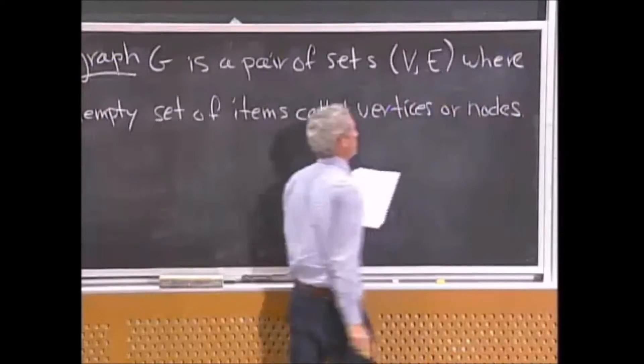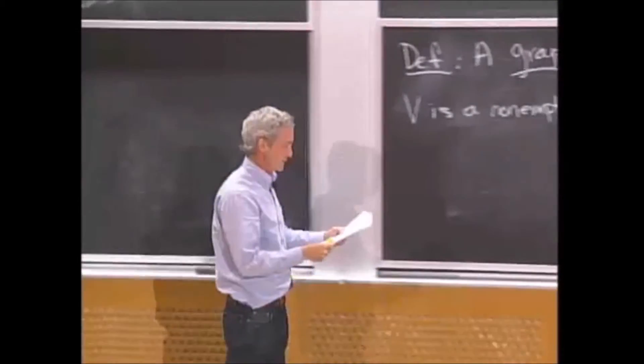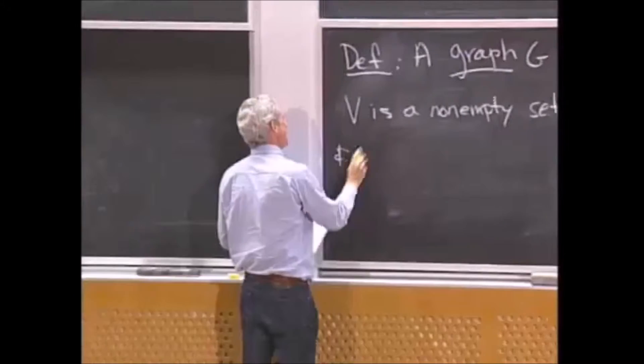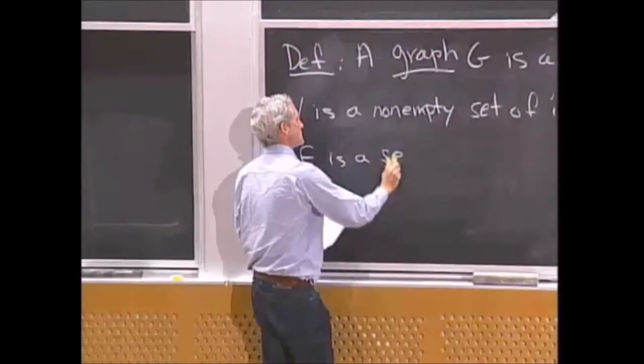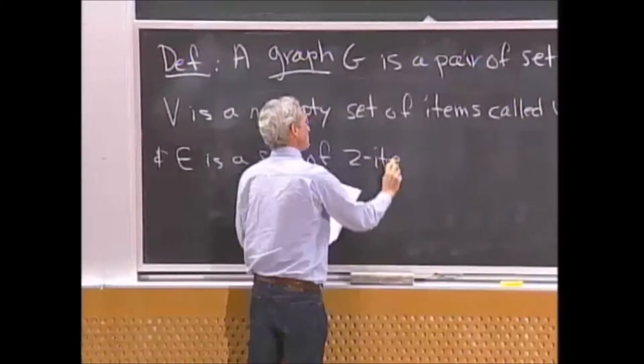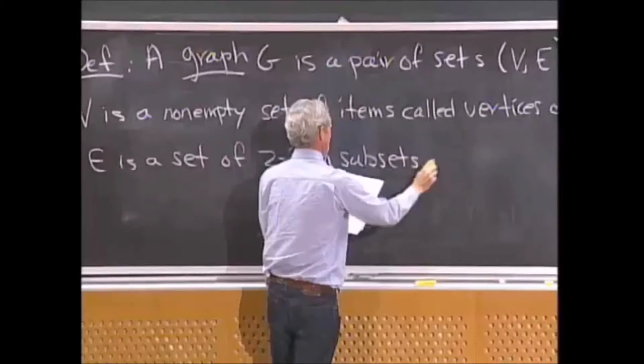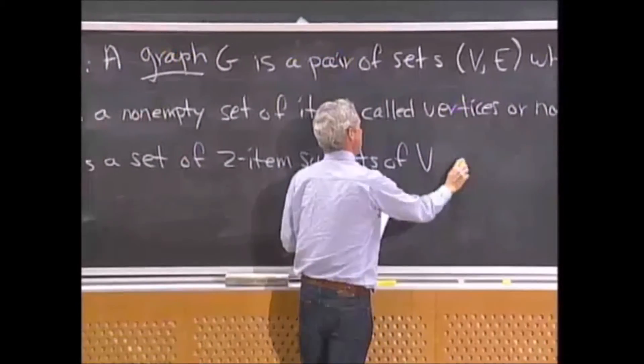And we'll go back and forth between vertices and nodes. Even in the text, we use both words interchangeably. And E is a set of two-item subsets of V, and they're called edges.